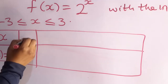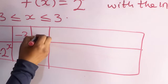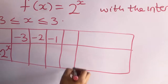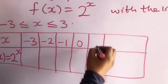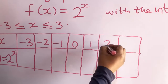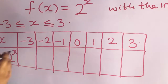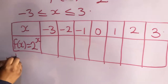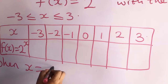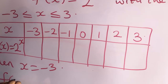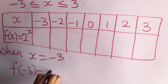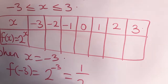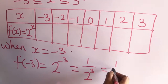When x is equal to minus 3, f(minus 3) will be equal to 2 raised to the power minus 3, and this gives us 1 over 2 raised to the power 3, which gives 1 over 8. When x is equal to minus 2, f(minus 2) will be equal to 2 raised to the power minus 2, which is equal to 1 over 2 raised to the power 2, and that is 1 over 4.